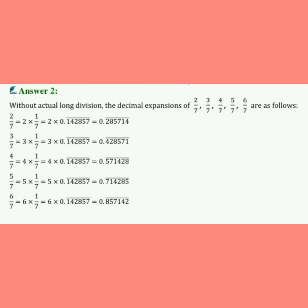अब आप सोच रहे होंगे कि मैंने हर एक number को separate करके 1/7 से multiply क्यों किया। क्योंकि question में clearly बोला था — without actual long division method decimal expansion में convert करना है। यहाँ किसी को भी long division से divide नहीं किया, फिर भी decimal में convert हो गया, क्योंकि 1/7 का answer given था। इसी तरीके से बाकी sums भी decimal में convert कर सकते हो।